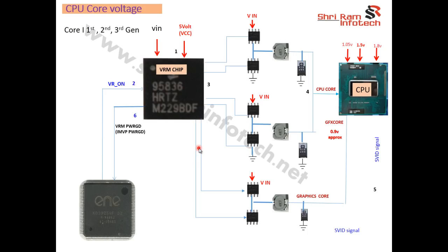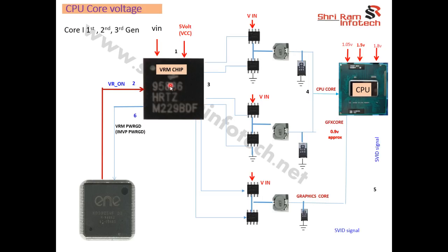It is not necessary that all VRM sections have three pulse width modulators. In some sections, the graphics core voltage is generated by a different pulse width modulator. Once the CPU gets its power and the three voltages, the VRM chip receives a signal called VR_ON. This VR_ON signal is supposed to be 3 volts, or 1 volt on the latest motherboards, commanding the pulse width modulator to turn on.